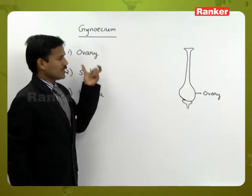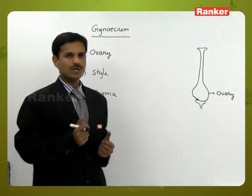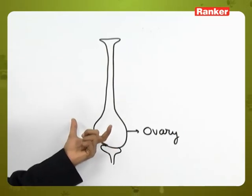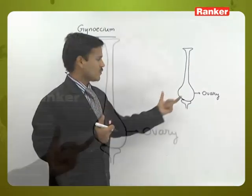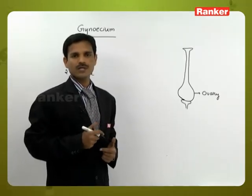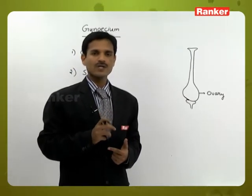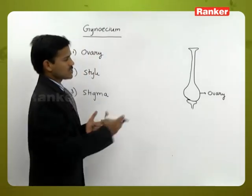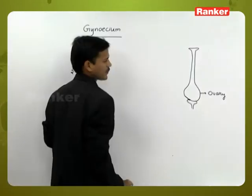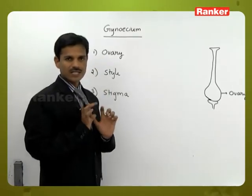After fertilization, the ovary develops into a fruit or fruit wall. The ovary is present only in angiosperms. In gymnosperms, the ovules are naked and not covered by an ovary. In angiosperms, the ovules are embedded within the ovary. So ovaries are present only in angiosperms, not in gymnosperms.